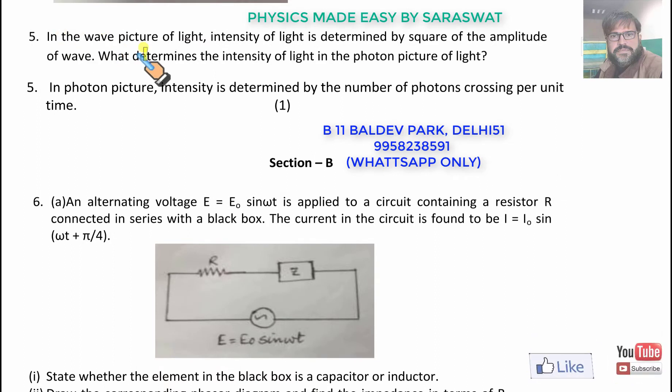In the wave picture of light, intensity of light is determined by square of the amplitude. That is, I is proportional to amplitude squared. What determines the intensity of light in the photon picture? In the photon picture, intensity is determined by the number of photons crossing per unit time per unit area.